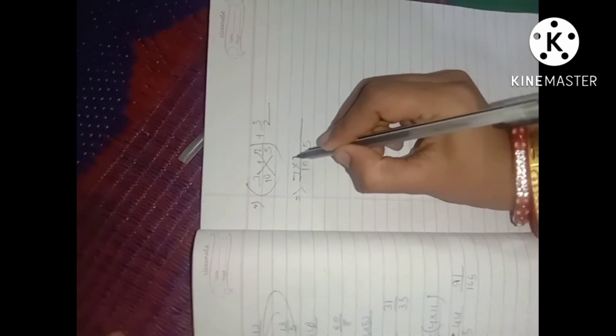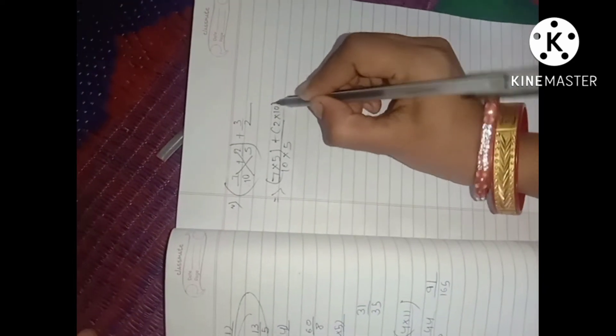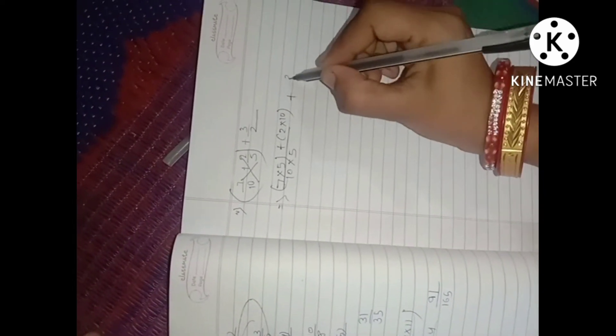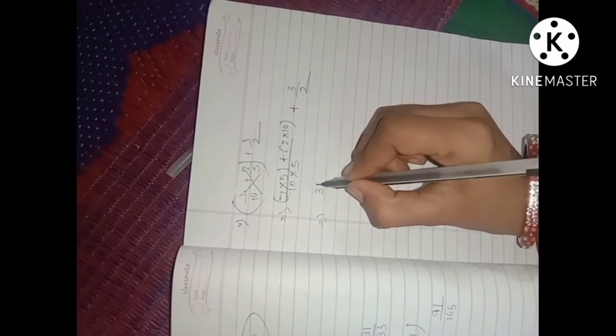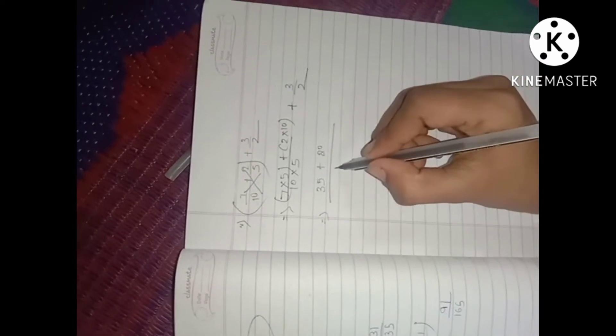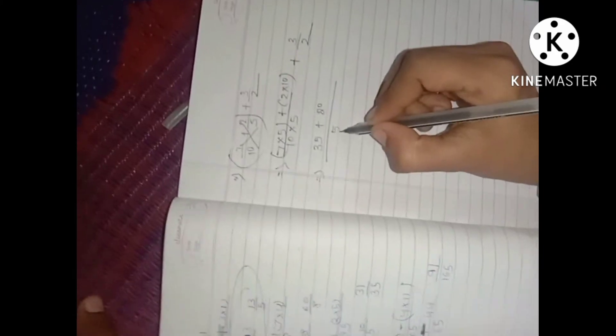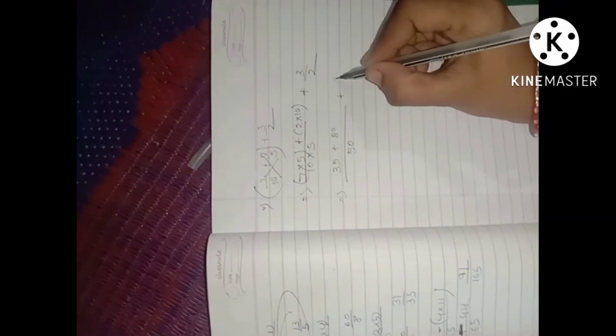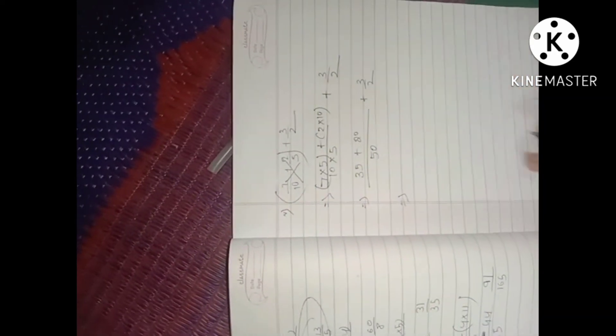7 into 5 plus 2 into 10, 5 into 5, 3 into 5. Then my answer: 7 into 5 plus 3 into 10.